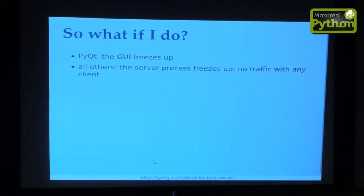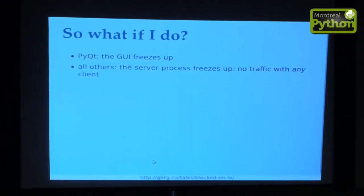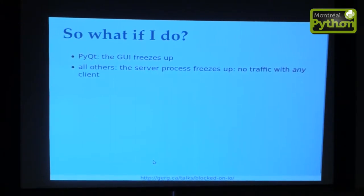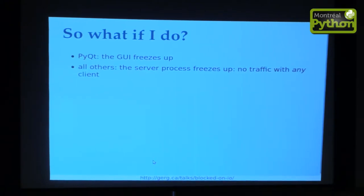So what happens when you block the event loop? I threw a GUI framework into the mix because you've all seen the results of blocking the event loop in GUIs: the application on your desktop freezes up, doesn't respond to input, it doesn't repaint. I'm pretty sure that usually the reason is they're using an event-driven framework and somebody blocked the event loop. In Tornado, Twisted, asyncio, whatever — what happens is the server process freezes and cannot talk to any of its clients. The whole reason you're using an asynchronous I/O framework is to handle thousands of concurrent clients, and if you block the event loop, you've just blocked all of them.